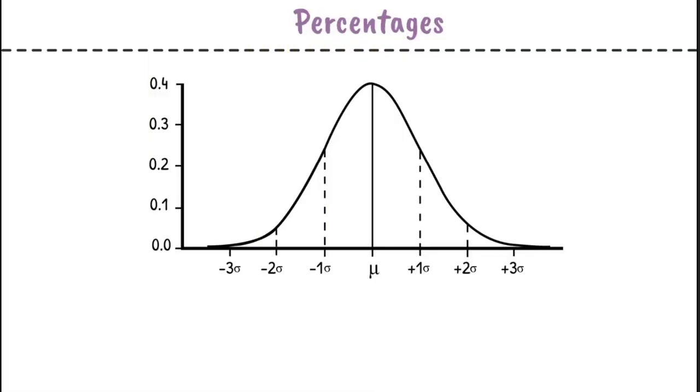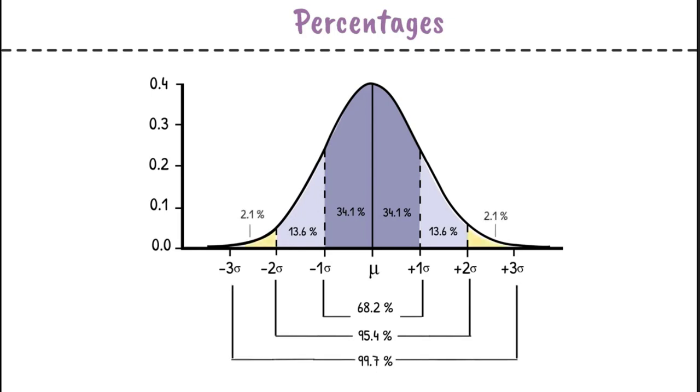These six standard deviations aren't just here to look pretty. 68.2% of the data will actually fall between negative 1 and positive 1 standard deviations. 95.4% of data will fall between negative 2 and positive 2 standard deviations. And then a total 99.7% of data will fall between negative 3 and positive 3 standard deviations. And a last few data points might fall on the tips of the tail.